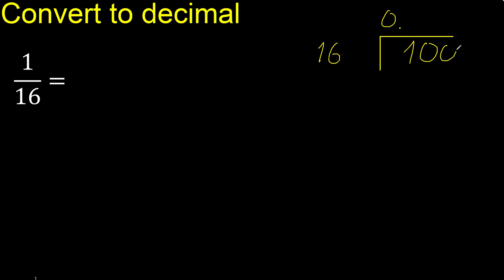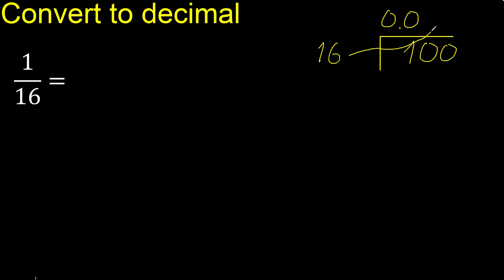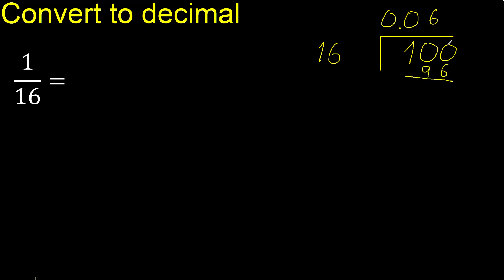100 is not greater. 16 multiplied by which number is nearest to 100 but not greater? 16 multiplied by 7 is greater. 16 multiplied by 6 is 96, which is not greater. Subtract — the remainder is 4.